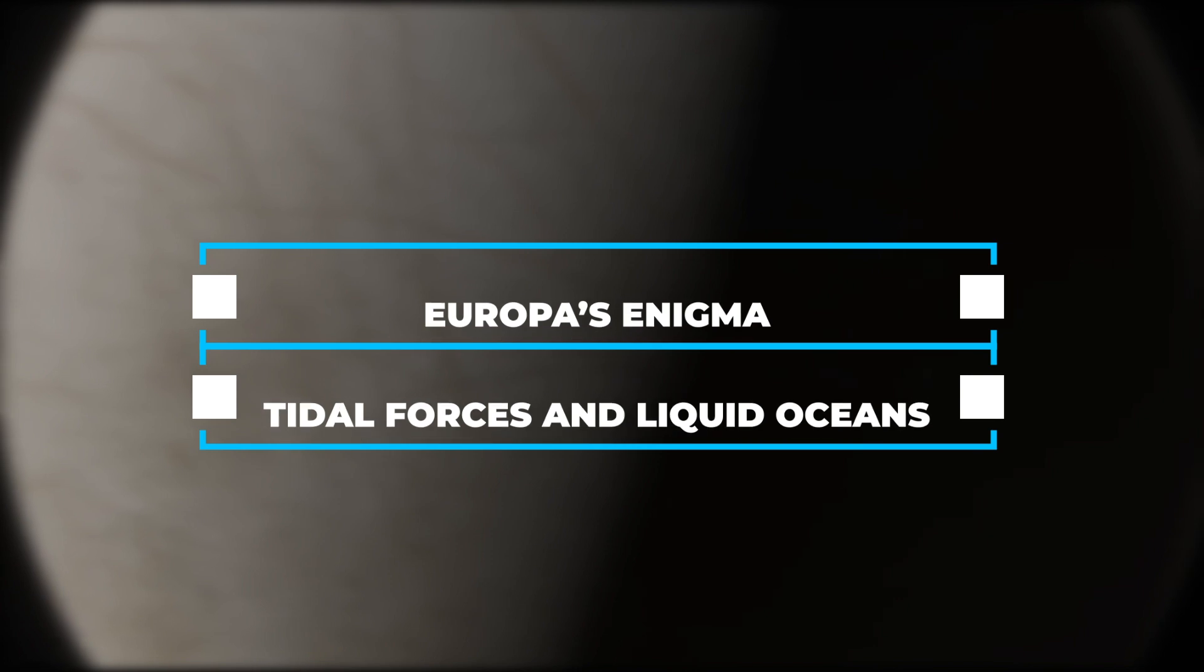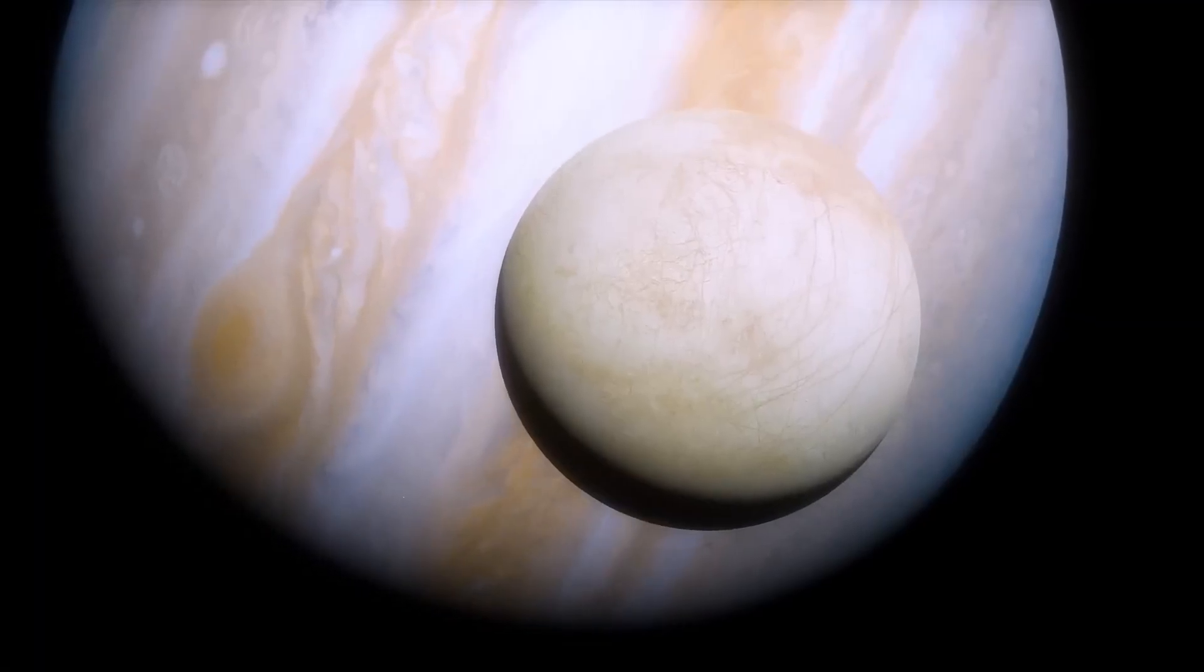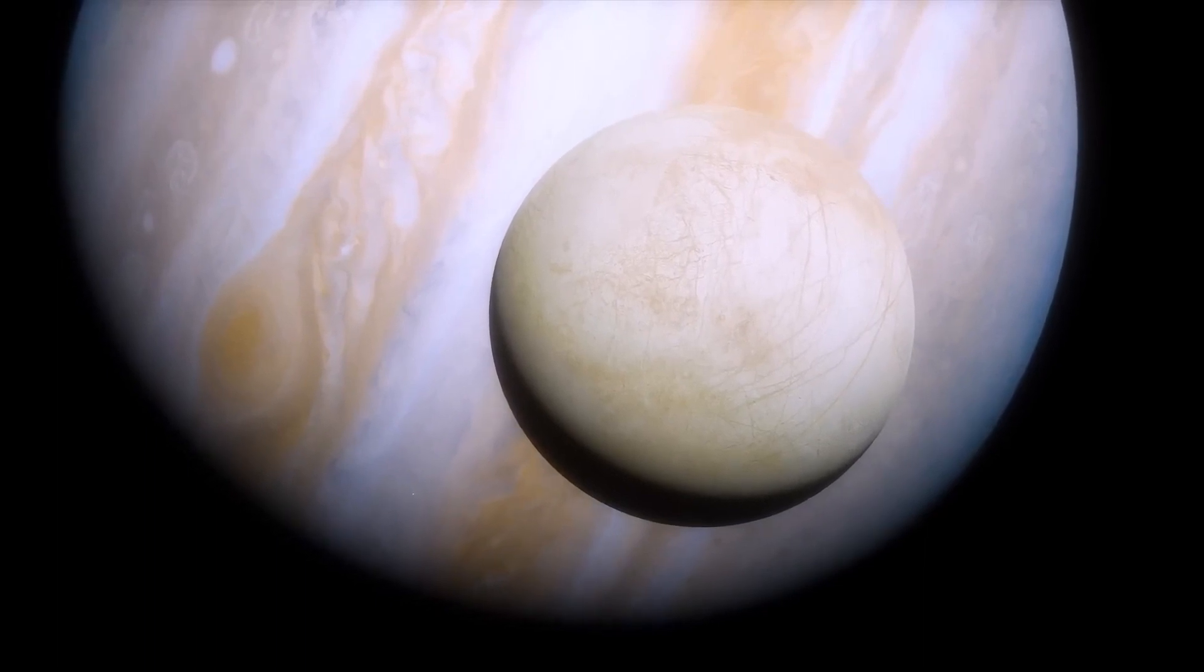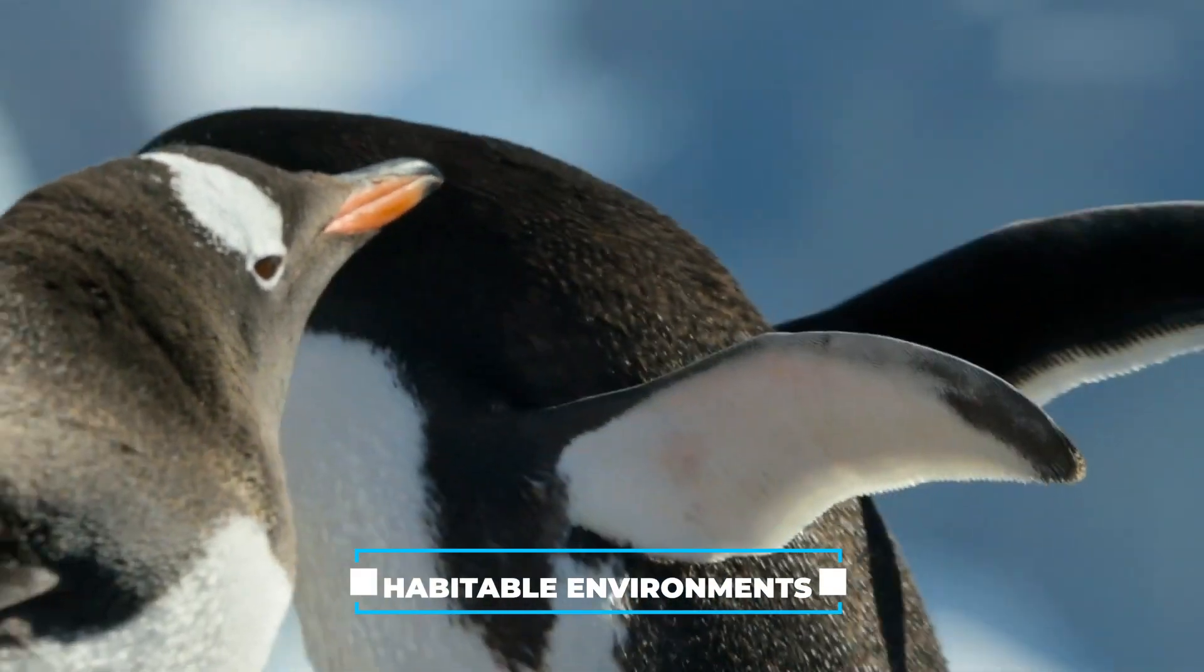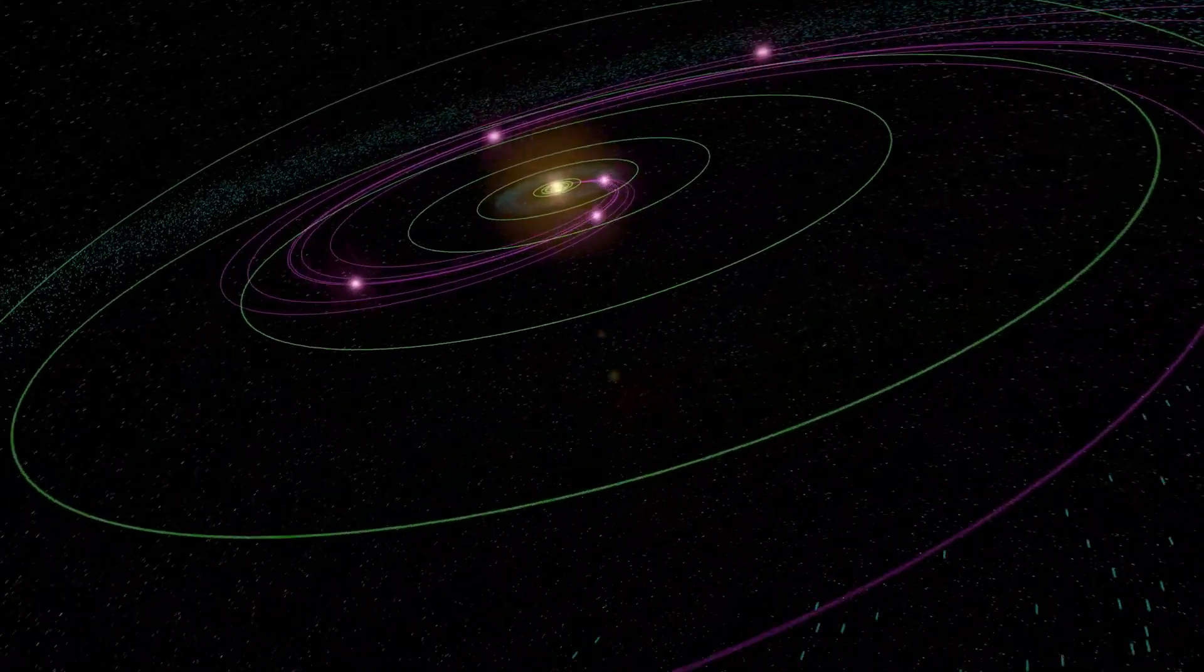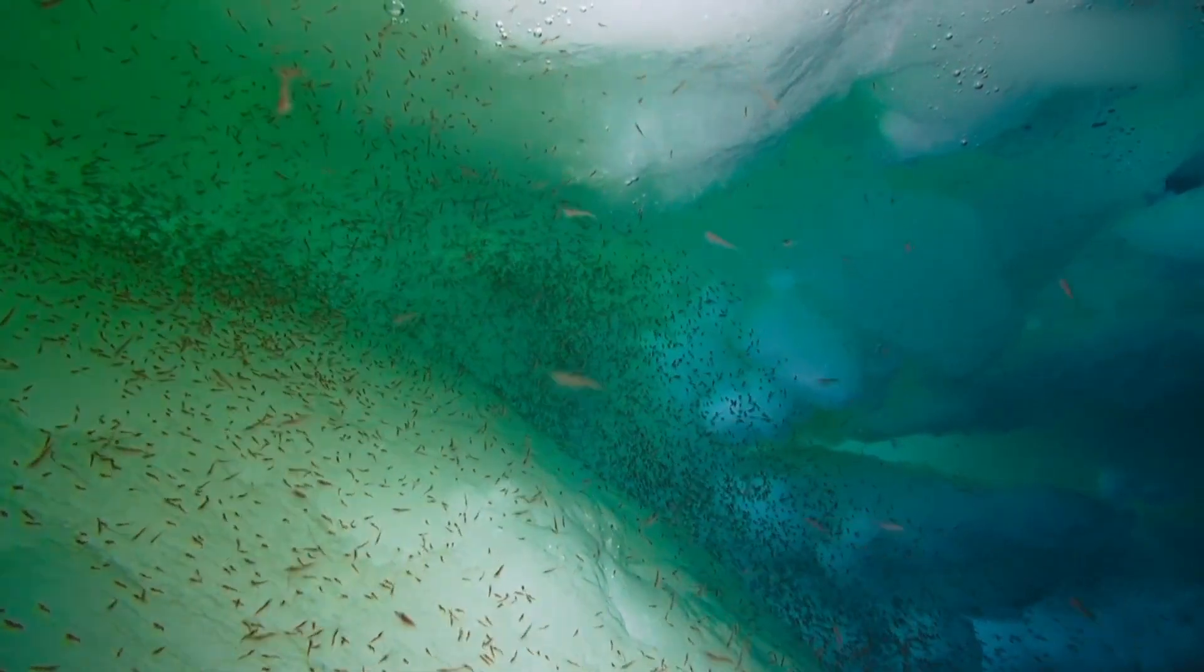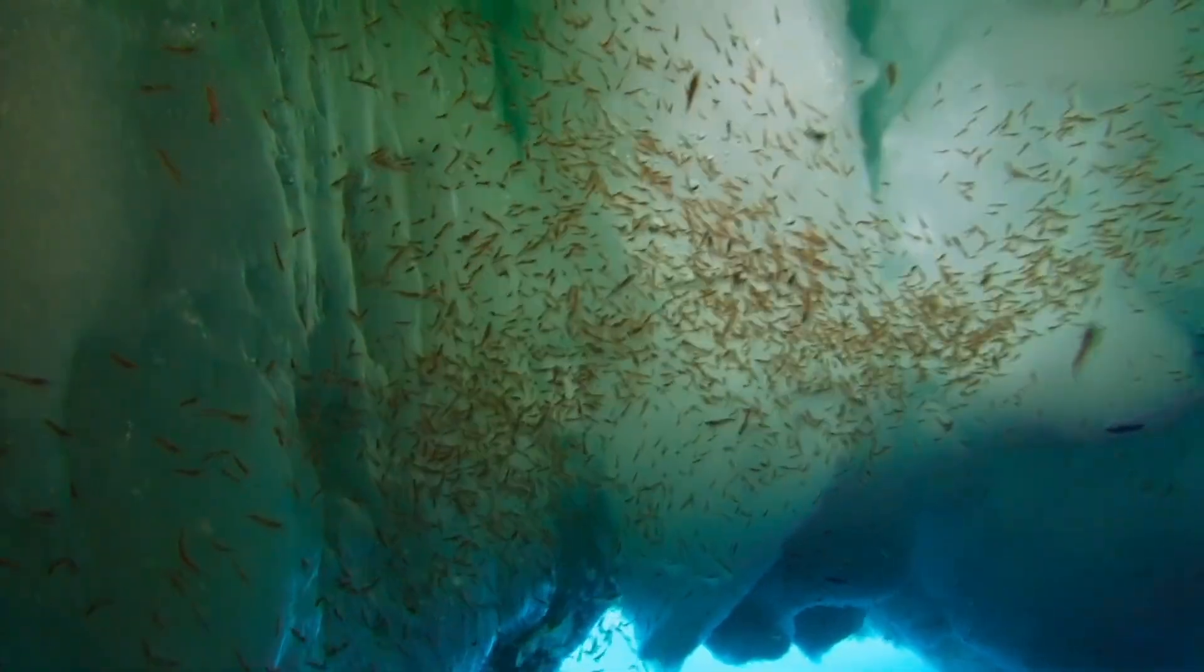Europa's Enigma: Tidal Forces and Liquid Oceans. Europa, one of Jupiter's many moons, challenges our traditional understanding of habitable environments. It doesn't conform to the idea of the Goldilocks zone since it resides quite far from the Sun, well beyond where traditional habitable conditions might be expected.